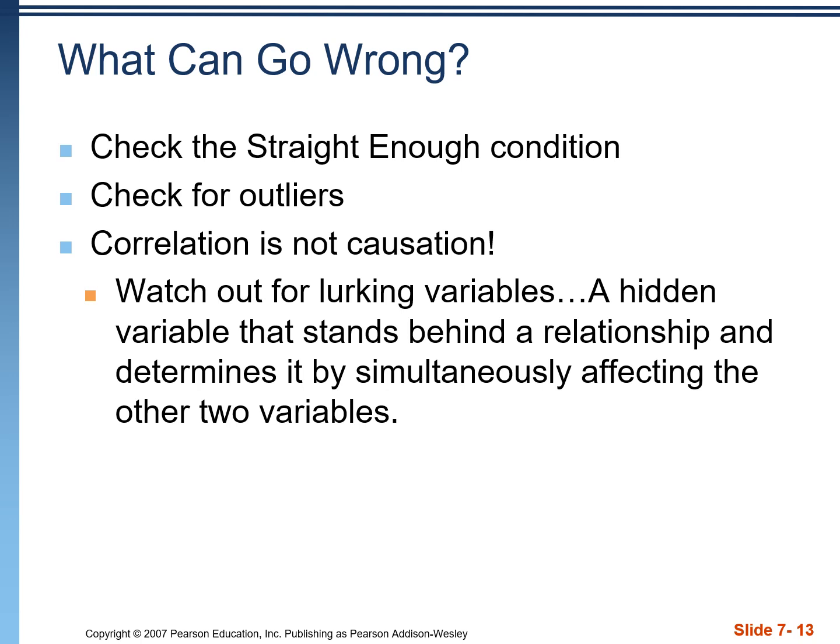We only calculate correlation values in certain situations: first, we want a scatterplot that's approximately linear; second, we want to make sure there are no outliers, because a single outlier can change the correlation value quite a bit. And when we see a correlation close to one or negative one — a really strong association — we want to keep in mind that correlation is not causation. Although two variables are closely associated, it doesn't mean that one is causing the other. It's possible there's something called a lurking variable, which exists in the background and affects both variables simultaneously.